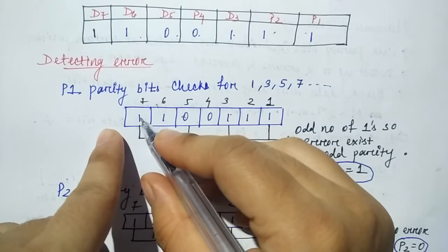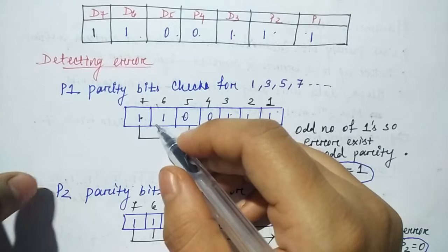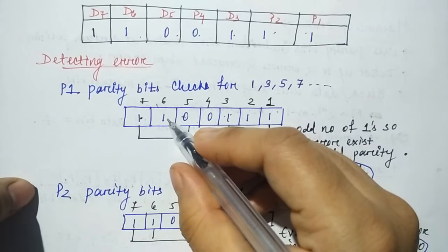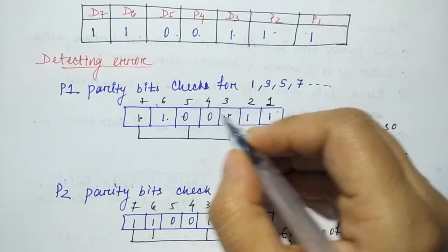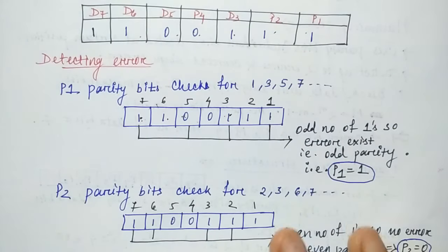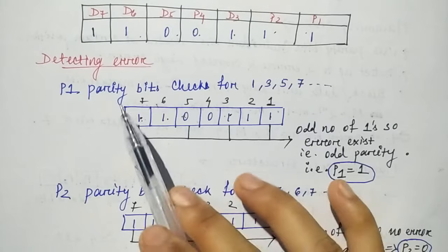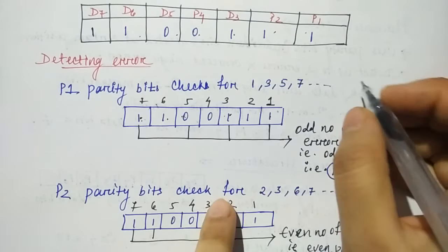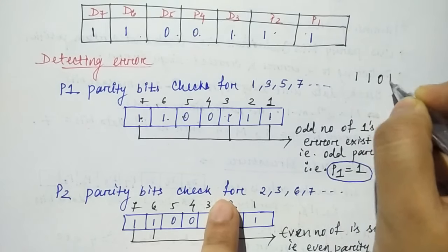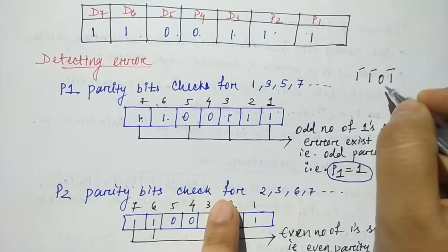P1 checks positions 1, 3, 5, and 7. If you are seeing 1, 3, 5, and 7, how many ones are present? 1, 2, 3 ones. Three ones are present. When we are checking for P1 in positions 1, 3, 5, 7, what values did we get? 1, 1, 0, 1. This means 3 ones.